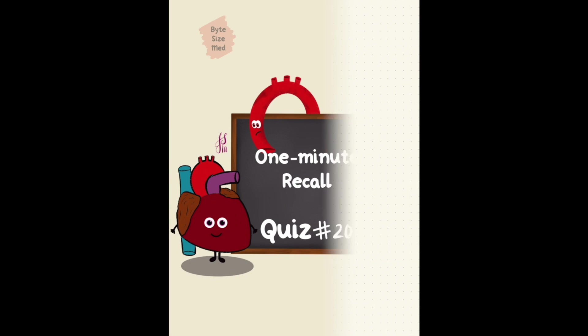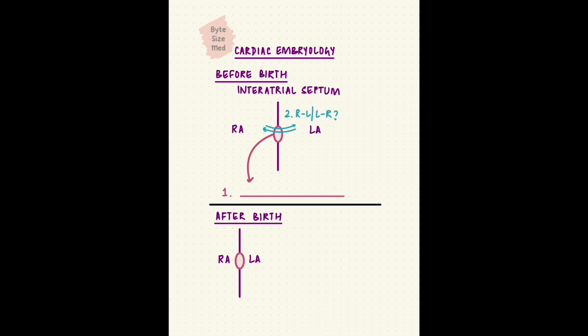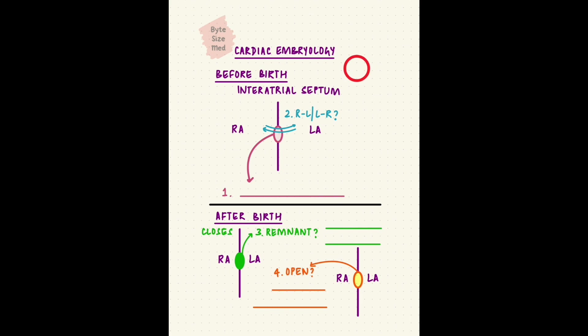Back to those shunts in fetal circulation. When the atria develop, they split with an interatrial septum — there's a space in that septum. Your task is to recall what that opening is called, which way blood flows through it (right to left or left to right), what it's called after birth when it closes, and what the condition is called if it doesn't close. Pause the video here and take as much time as you need.